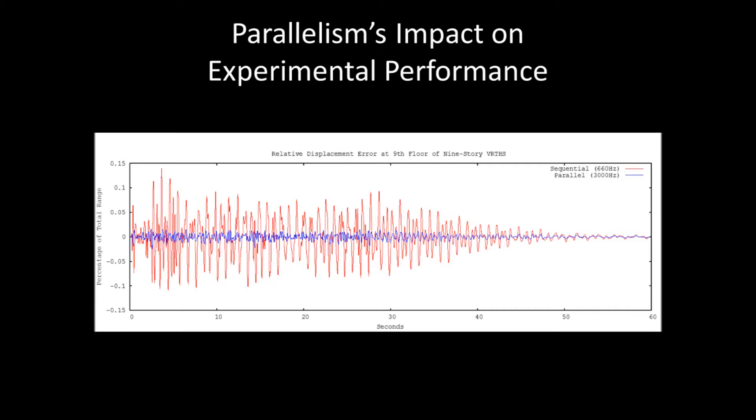This graph shows a simulated experimental error at the ninth story relative to a reference solution. The much higher periodic rate of the parallel implementation is able to achieve roughly an order of magnitude reduction in error relative to the sequential version.